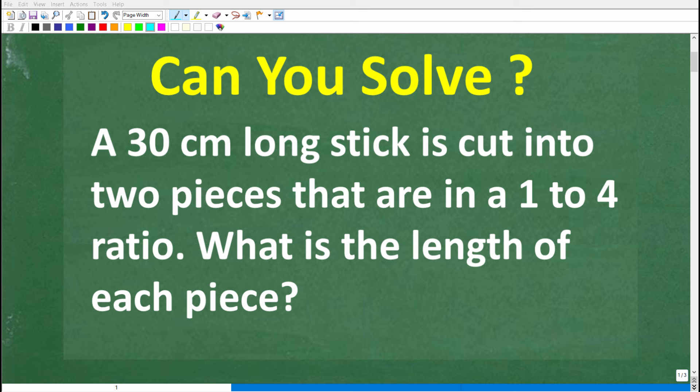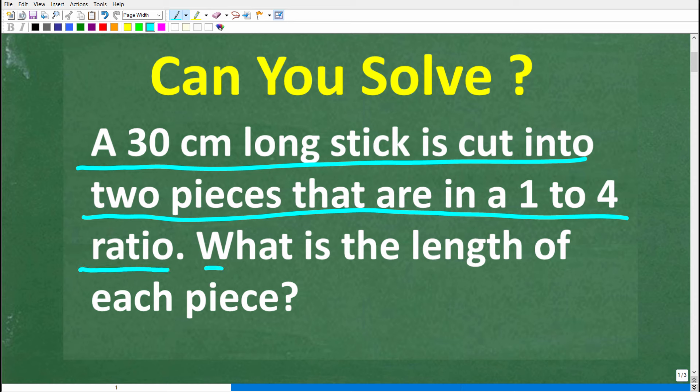Okay, so let's see if you know enough math to solve this word problem, which is the following. A 30 centimeter long stick is cut into two pieces that are in a 1 to 4 ratio. What is the length of each piece?